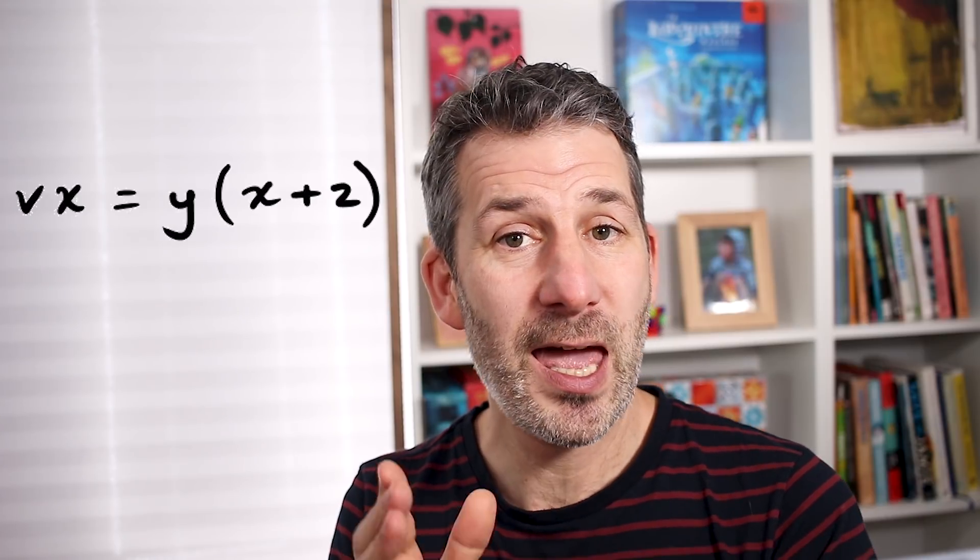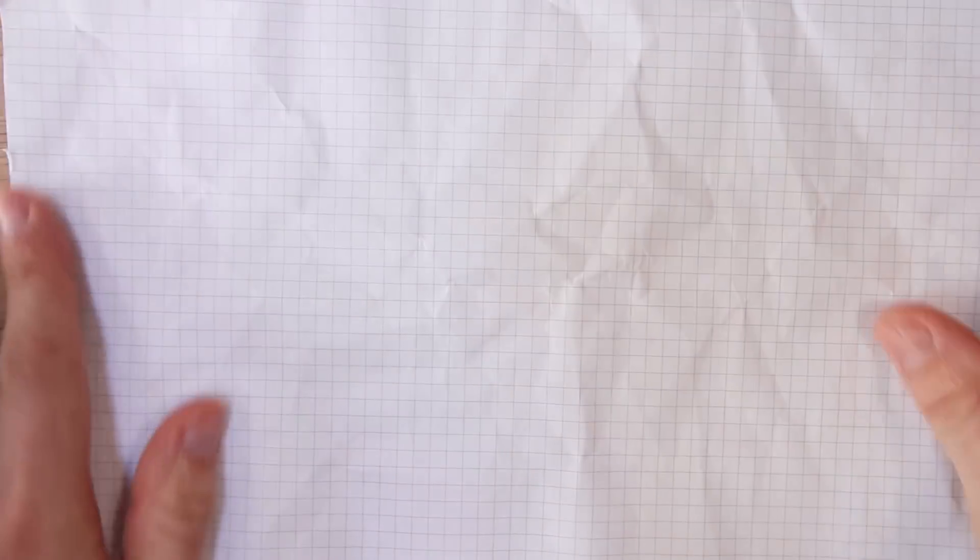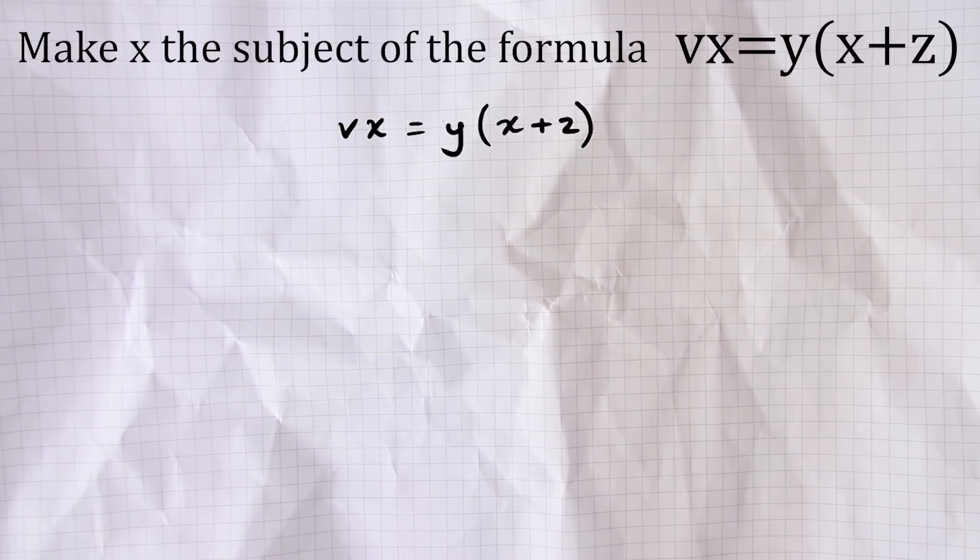In the example at the start, we had VX equals Y and then in brackets X add Z and we're asked to make X the subject. That means that we need to do a bit of rearranging so that the X is all on its own, so we have X equals something, right? So, the idea is we end up with a formula for calculating X using only the other letters involved. Now, the first thing I notice here is that the X appears twice and that one of them is buried inside the bracket, and if we're trying to get the X on its own, it's no use to us if it's stuck inside a set of brackets. So, it's easy to deal with though, all we've got to do first of all is just expand or multiply out those brackets, and if we do that, we get VX equals XY add YZ. That's the first thing. If the thing you're trying to make the subject is in brackets, expand those brackets.